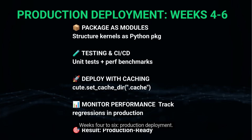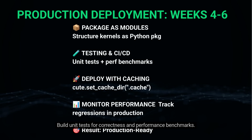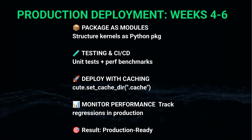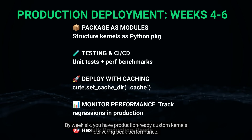Weeks 4 to 6: production deployment. Package your kernels as Python modules with proper structure. Build unit tests for correctness and performance benchmarks. Enable JIT caching for production use. Monitor kernel performance to catch regressions. By week 6, you have production-ready custom kernels delivering peak performance.